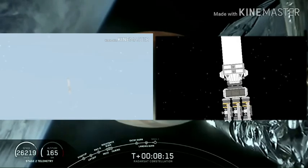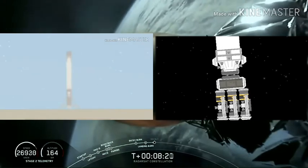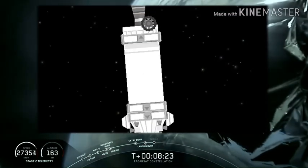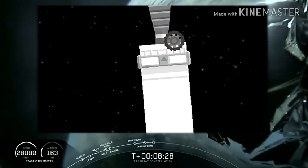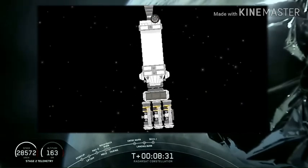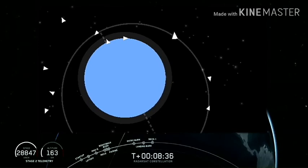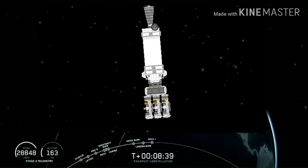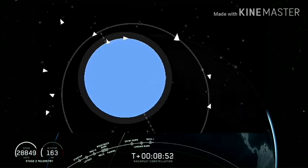So with that good news, we turn back into second stage, our primary mission, as it continues to carry the three Radarsat Constellation satellites to sun-synchronous orbit. That's a shot of the MVAC nozzle as it burns through, and there we had confirmation of second engine cutoff or SECO. So now we're just going to wait for confirmation of second stage good orbit. GNC confirms good first orbit insertion. We have confirmation that we have a good orbit for second stage.